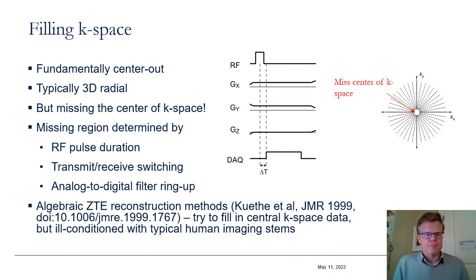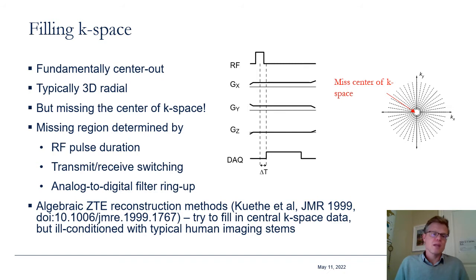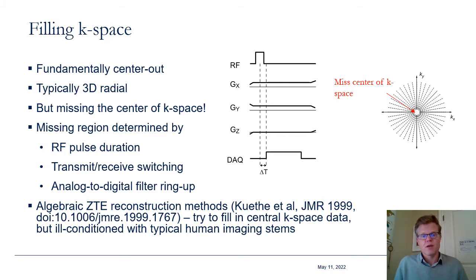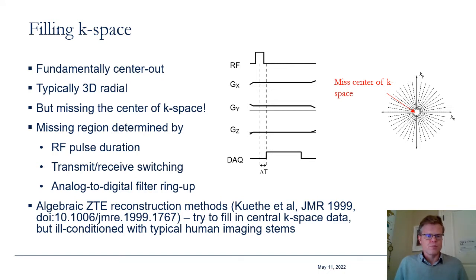Returning to the fundamentals of filling k-space in ZTE: ZTE is a fundamentally center-out k-space sampling sequence, typically done with 3D radial. The main limitation is that we are missing the center of k-space due to the dead time between the RF pulse and when data acquisition begins. This dead time is determined by the RF pulse duration, how fast the scanner can switch between transmit and receive, and associated filtering and ringing-up times. One early approach to correct this was algebraic ZTE methods, using a signal model to fill in the center of k-space, but this is not widely used because it is typically ill-conditioned with the dead times on typical human imaging systems.